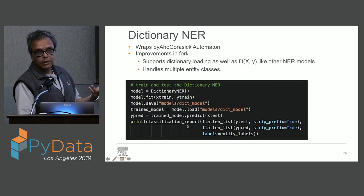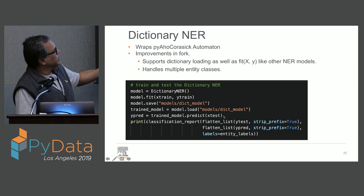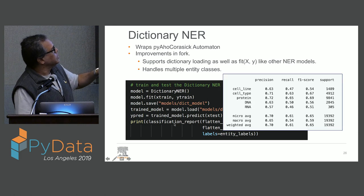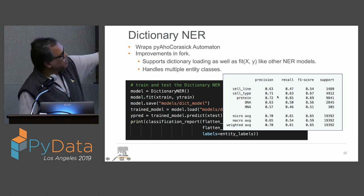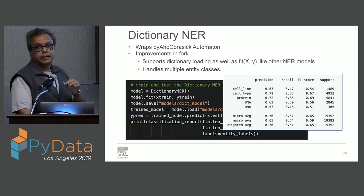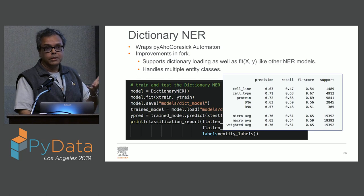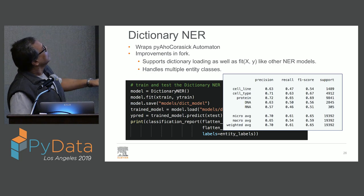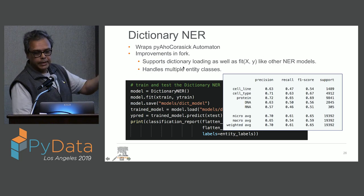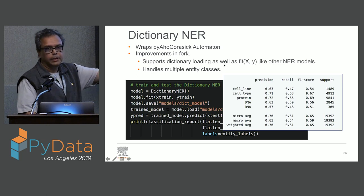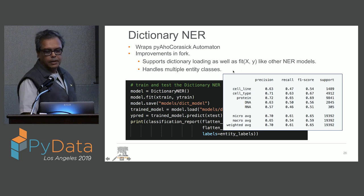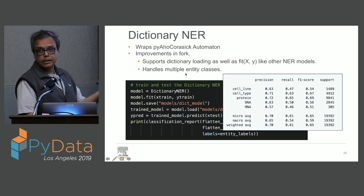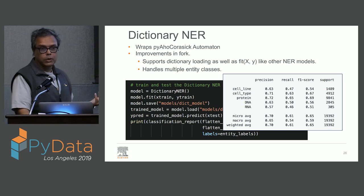You can generate a classification report. These are some adapter functions, but the classification report itself comes from scikit-learn. You can see it looks exactly the same. The dictionary NER gives about 0.65 F1, which is not that bad. Incidentally, dictionary NERs are usually the first line of defense because most companies have ontologies and dictionaries about their domain — and that's a very useful baseline, even though it's 1975 technology. My improvement here was converting it to the fit/predict pipeline and making it handle multiple entity classes; there was no reason the automaton couldn't handle more than one class at a time.